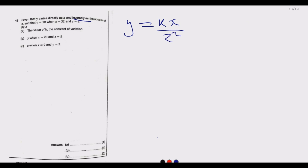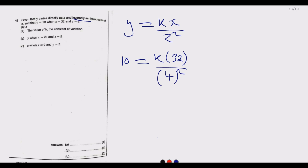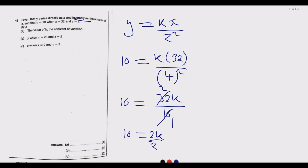We substitute the given values: y equals 10, x equals 32, z equals 4. So 10 equals 32k over 4 squared, which is 16. Simplifying, 10 equals 2k. Dividing both sides by 2, we get k equals 5.